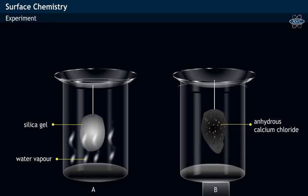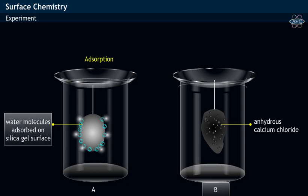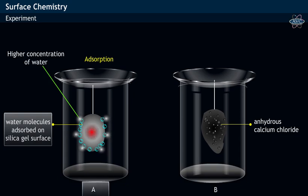After some time, it is observed in Vessel A that the water molecules, shown as transparent bubbles, are being adsorbed on the surface of the silica gel. That is, the higher concentration of water is present on the surface of the hanging silica gel.